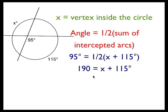Multiplying both sides by 2 gives us 190 equals X plus 115, and I multiply by 2 to get rid of the fraction. Subtract 115 from both sides and I get X equals 75.